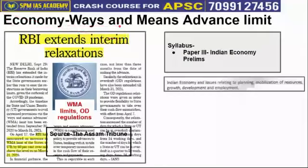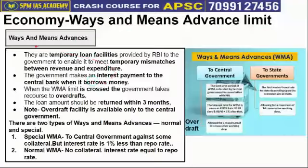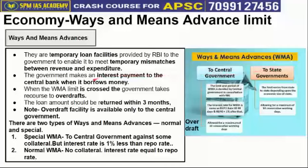The next article is taken from the economy segment. It is about the Ways and Means Advance limit. This topic is important from the UPSC syllabus Paper 3, Indian economy point of view. Ways and Means Advance is a kind of temporary loan facility provided by RBI to the central and state governments. Whenever the central or state government needs money, it can take a temporary loan from RBI, and this loan method is called Ways and Means Advance.